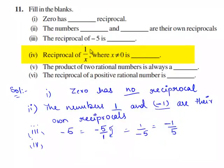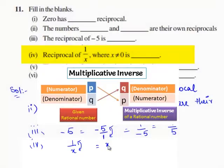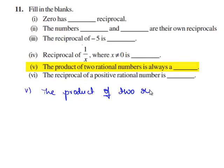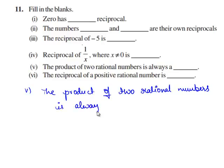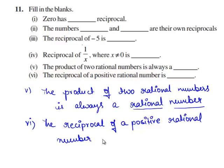The fourth bit: the reciprocal of 1 by x, where x is not equal to 0, is obtained by interchanging the numerator and denominator, which gives x. Therefore, the reciprocal of 1 by x is x. The fifth bit: the product of 2 rational numbers is always a rational number. The sixth bit: the reciprocal of a positive rational number is positive.